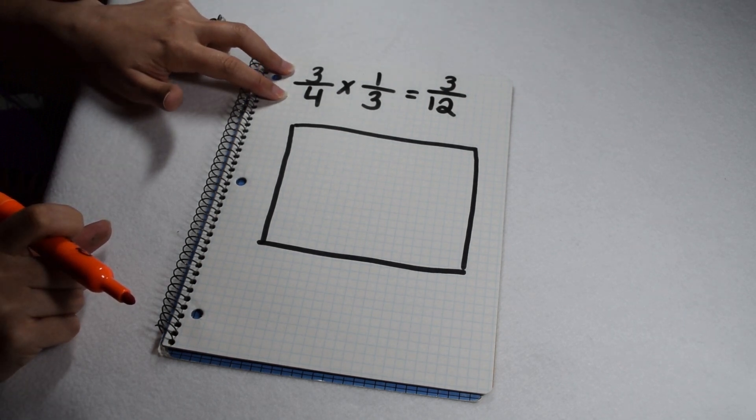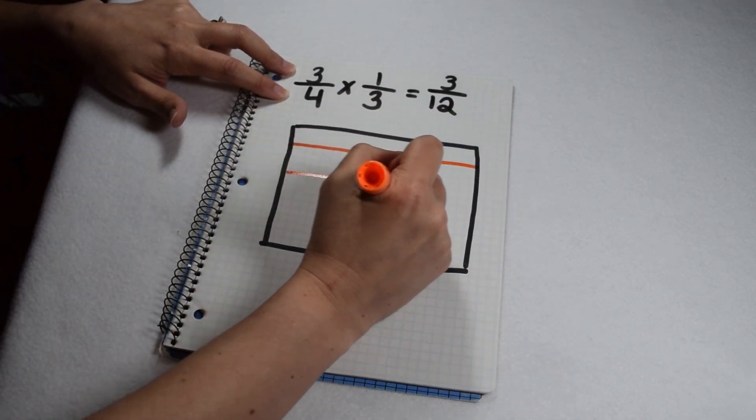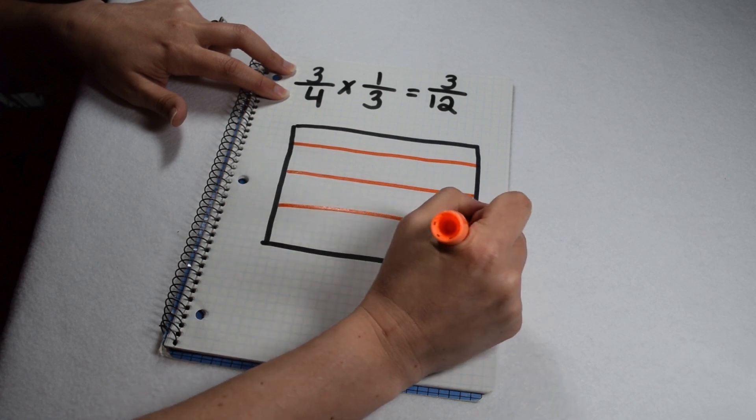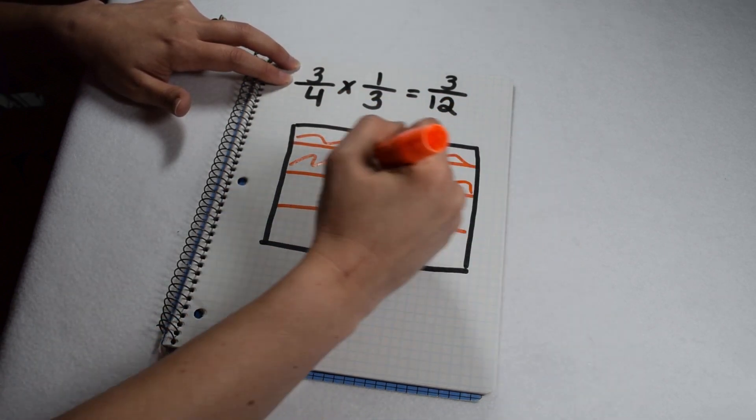Let's start with our fraction of 3/4. Since our denominator is 4, we know we need to divide our area model into 4 pieces. And then, for the numerator of 3, we're going to shade in 3 of them.